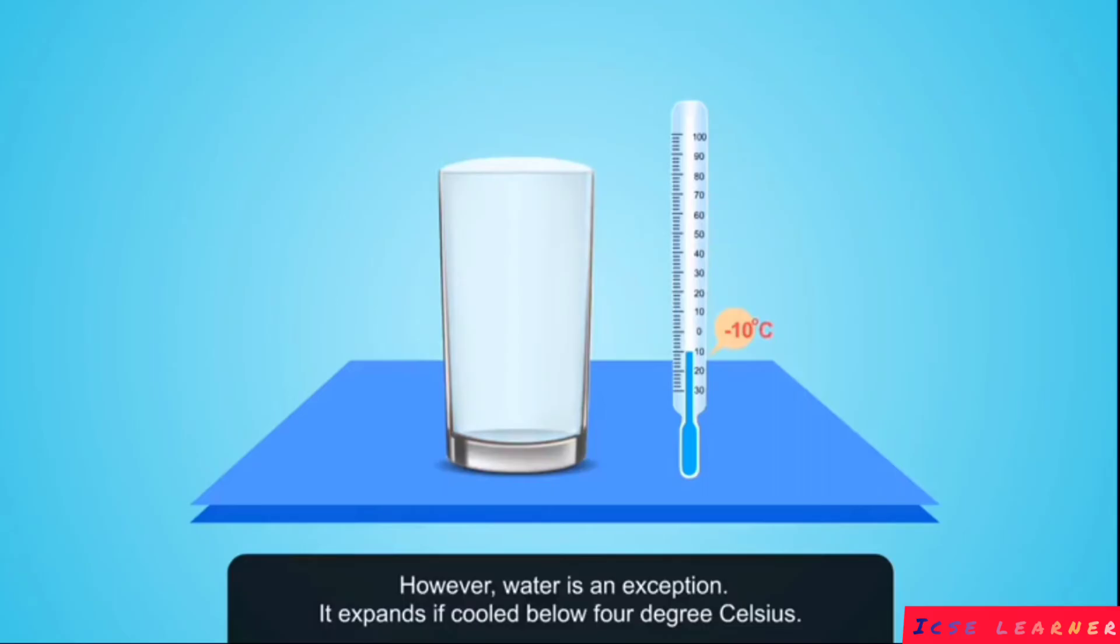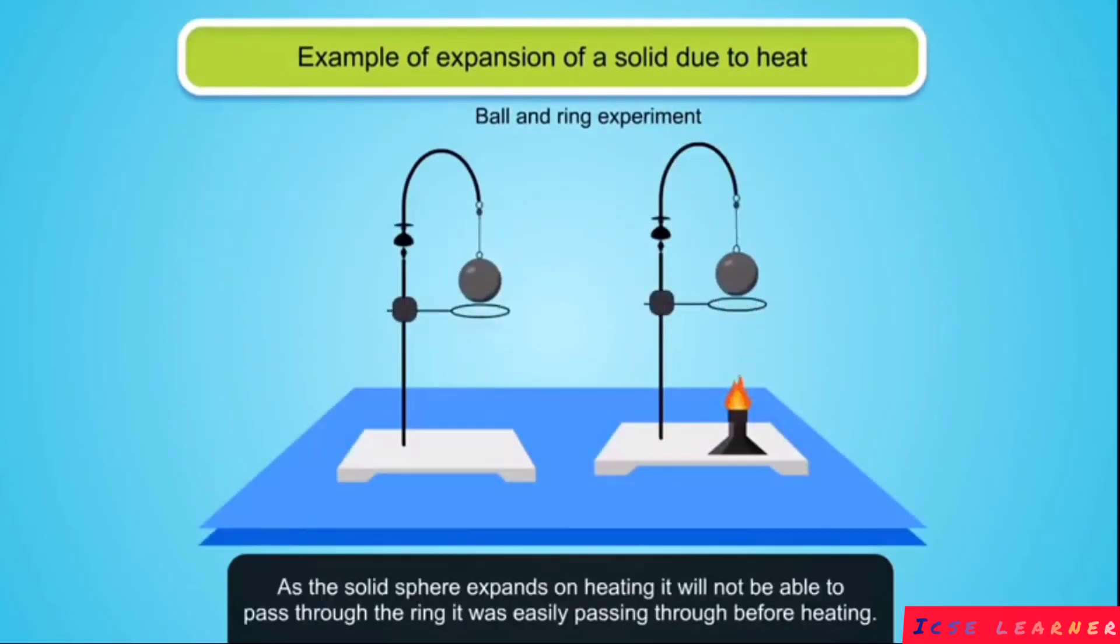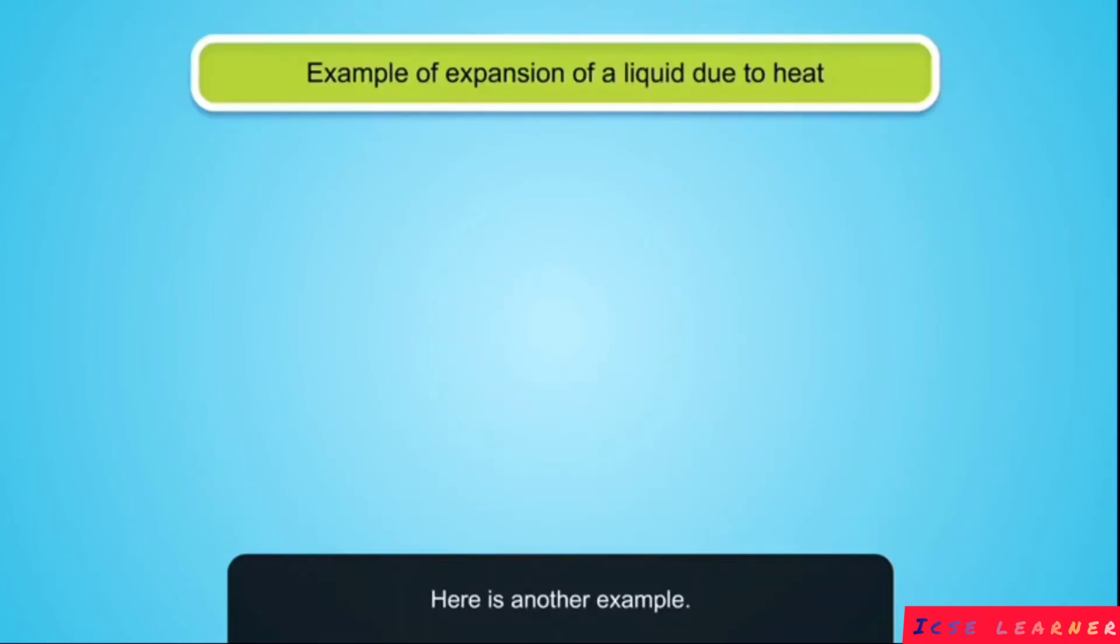Let's consider the example of ball and ring experiment. As the solid sphere expands on heating, it will not be able to pass through the ring it was easily passing through before heating.